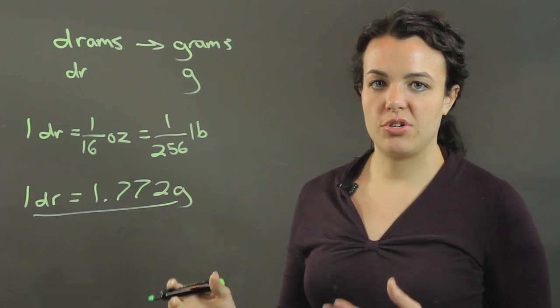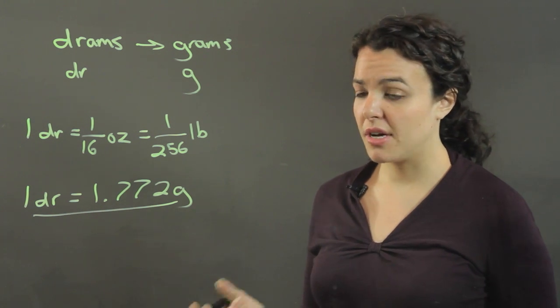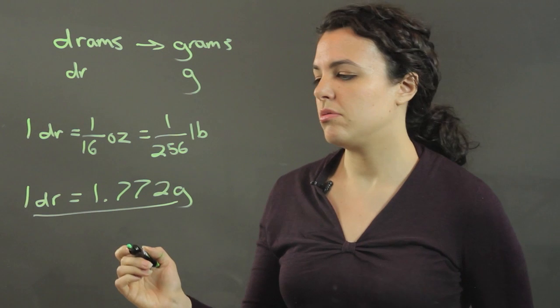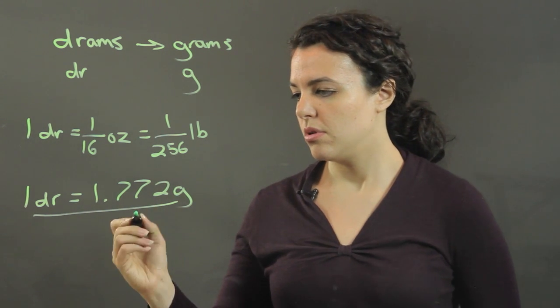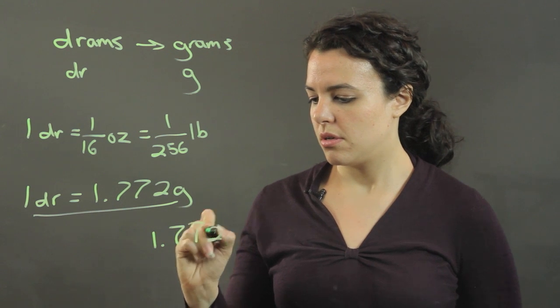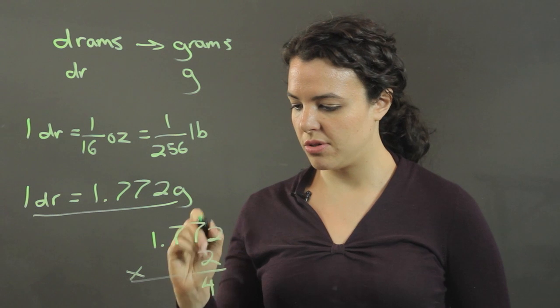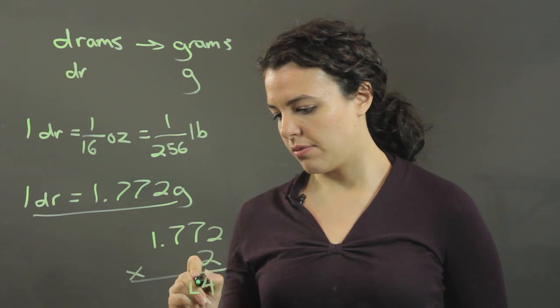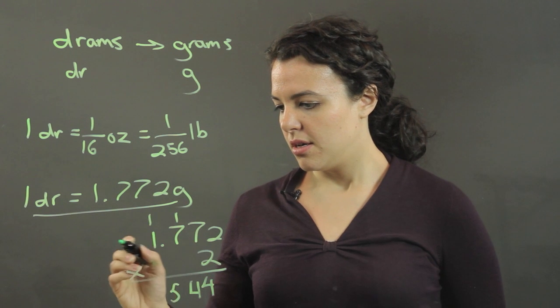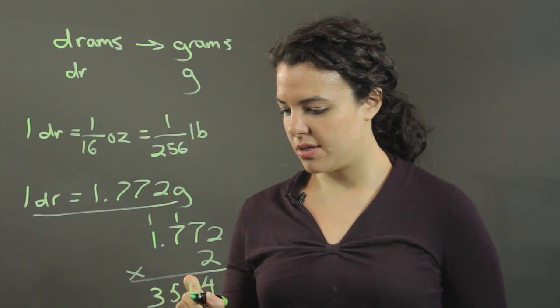So let's say I've got 2 drams. I just need to multiply this by 2. Let's go ahead and do that: 2 times 2 is 4, 2 times 7 is 14, carry the 1... there we get 15...